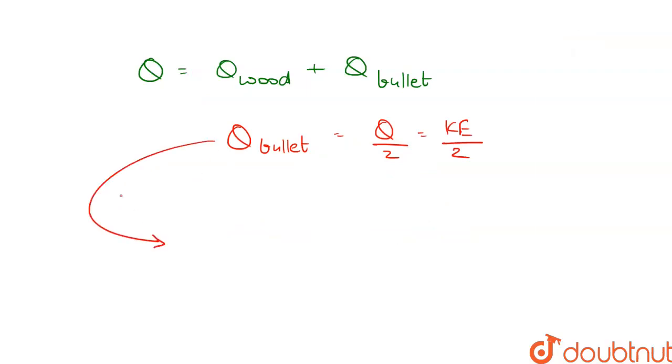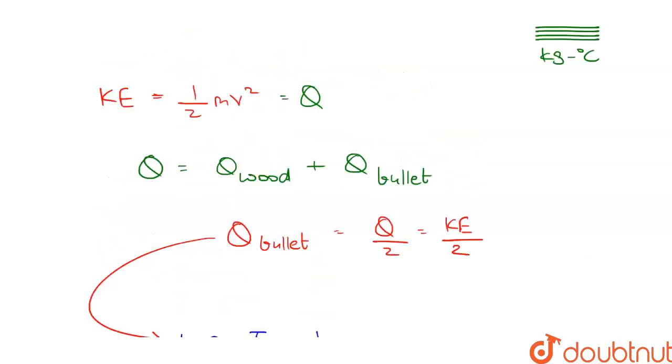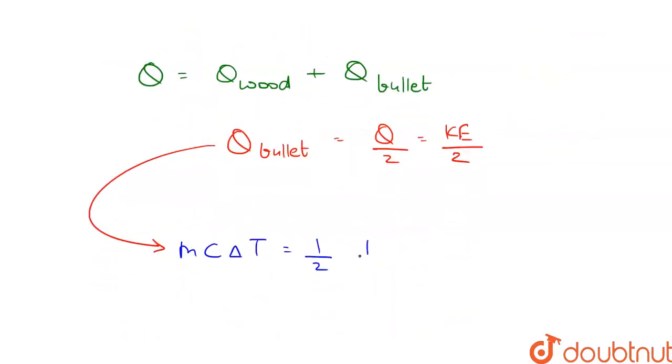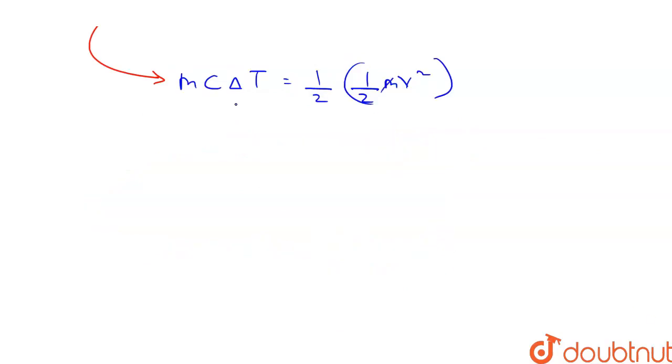Therefore the heat absorbed by the bullet can also be written as m c delta T and it will be equal to half into Q which is equal to half mv square. m and m can be divided from both sides and after rearranging we get delta T is equal to v square by 4 into c.